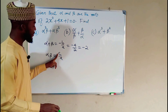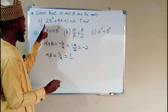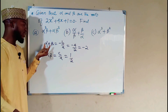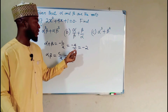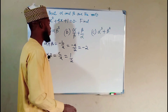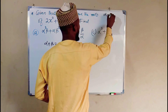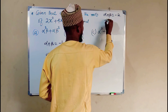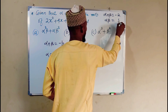Then for the product, we have c, which is the constant 1, over a, and a is the leading coefficient, which is 2. Hence, we can see that the sum and the product of these quadratic roots are negative 2 and 1 over 2, respectively. So we can write them aside: alpha plus beta equals negative 2, and alpha times beta equals 1 over 2.